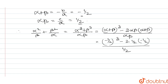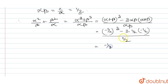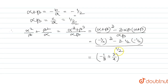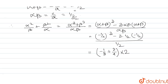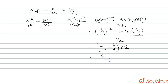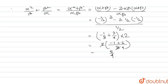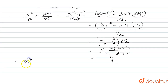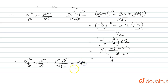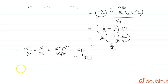Now for the product of the new roots: alpha squared divided by beta multiplied by beta squared divided by alpha equals alpha squared times beta squared divided by alpha times beta, which equals alpha beta. Since alpha beta equals 1 by 2, the product of the new roots is 1 by 2.